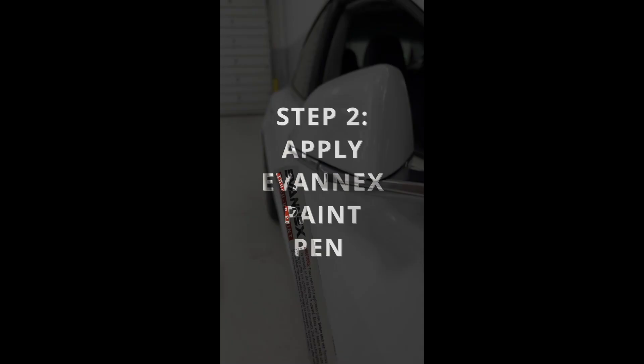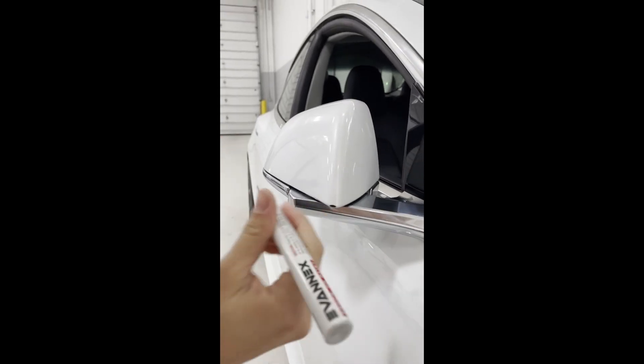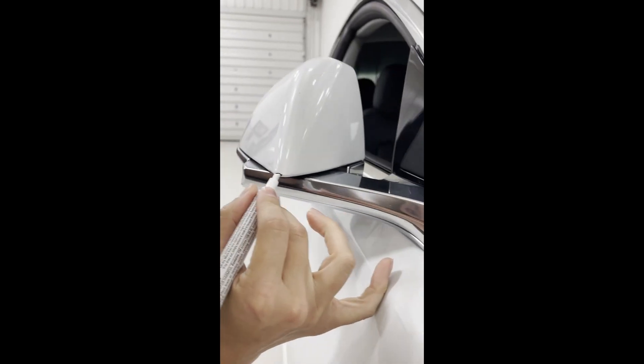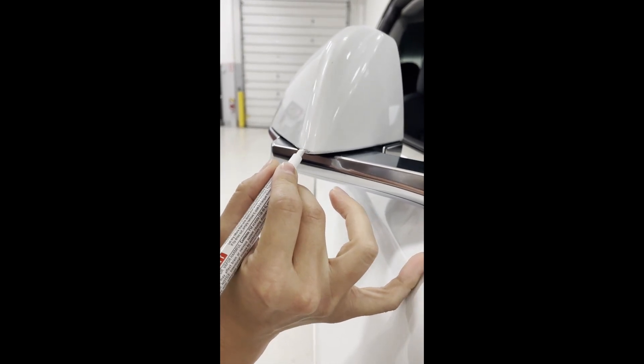Then we're just going to shake up our paint pen and dab it onto the area affected. So you can see the corner of this mirror is going to slowly disappear into a little bit of a white shade.